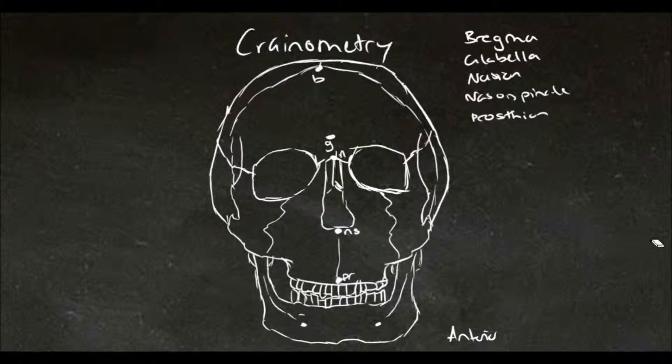The next one down is helpful if you have your central incisors and is referred to as the alveolaire and this marks the spot of the apex of the septum lying between the two central incisors.